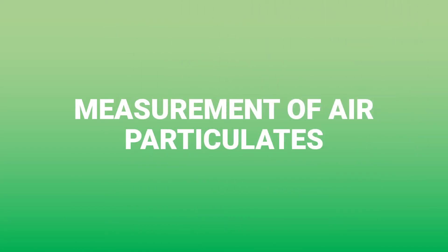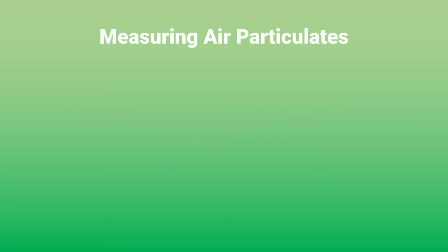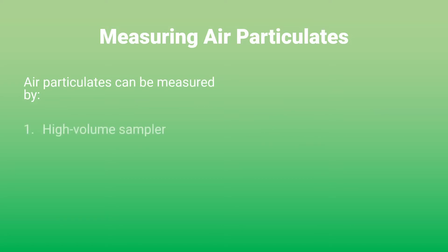The following topic is the measurement of air particulates. There are three instruments used in measuring particulate matter: the high volume sampler, cascade impactor, and nephilometer. These particle measuring devices are usually fitted with an automatic computer input and recording arrangement for accurate measurement of air quality.